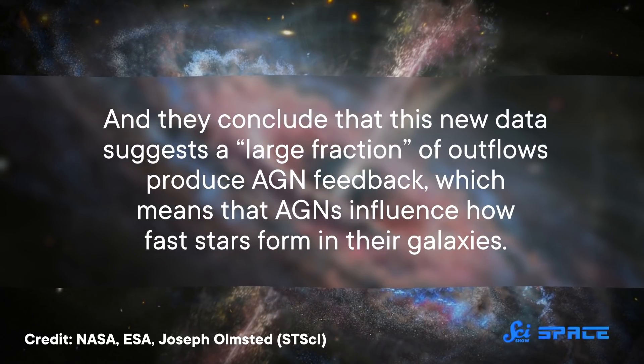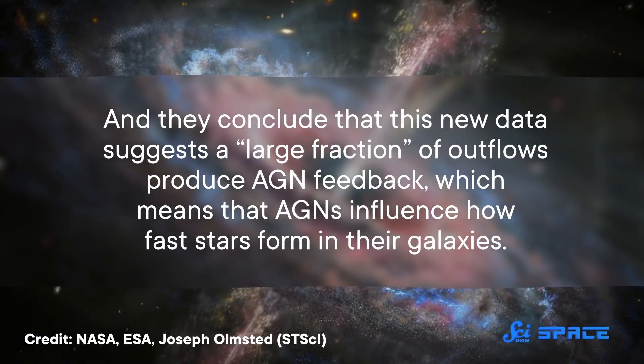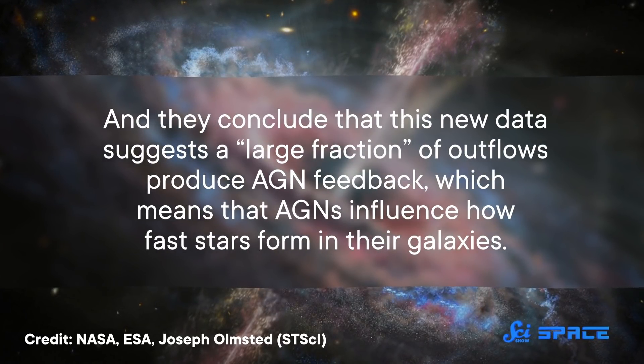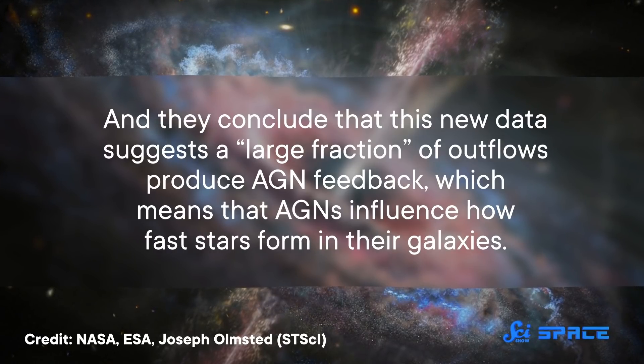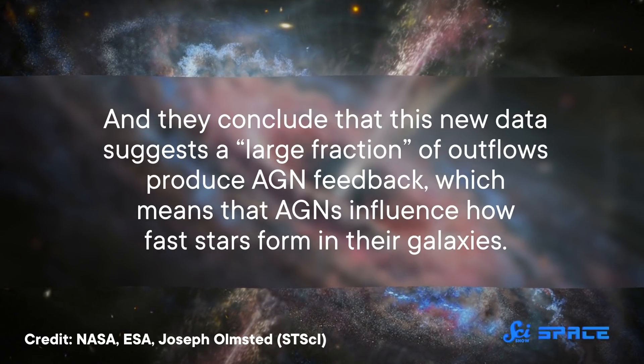And they conclude that this new data suggests a large fraction of outflows produce AGN feedback, which means that AGNs influence how fast stars form in their galaxies. In this case, the gas that would have otherwise been cool enough to collapse down into baby stars suddenly gets too hot to handle and has to cool down all over again for them to form.